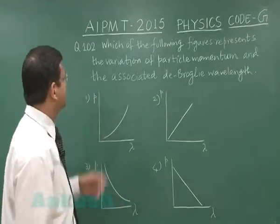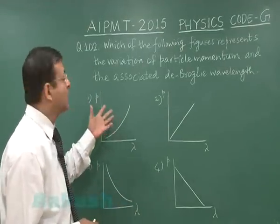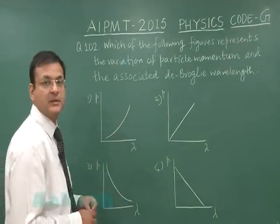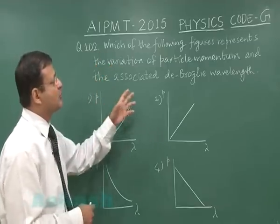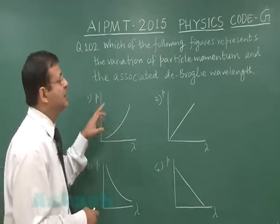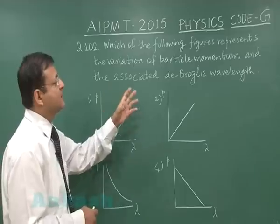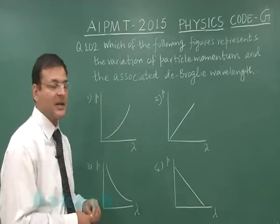Question 102 is based on de Broglie wavelength, or matter waves. Which figure represents the variation of particle momentum (denoted P) and the associated de Broglie wavelength (denoted λ)?